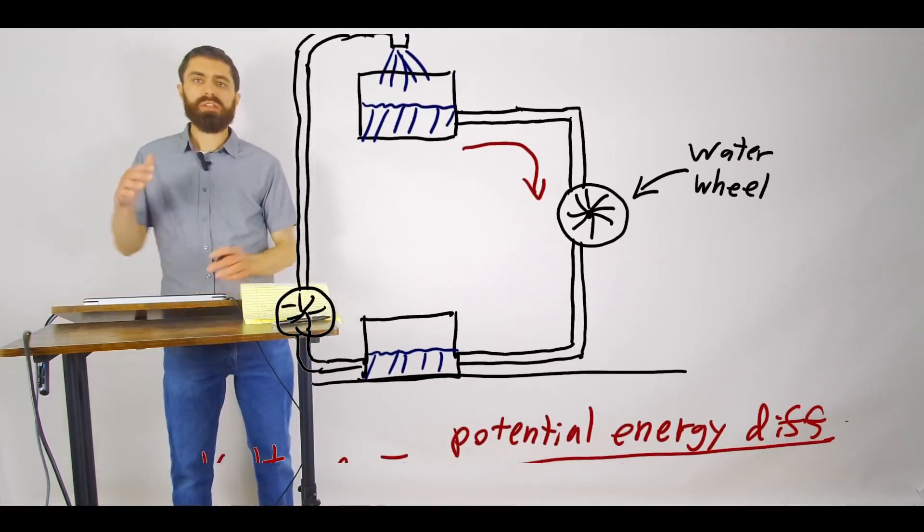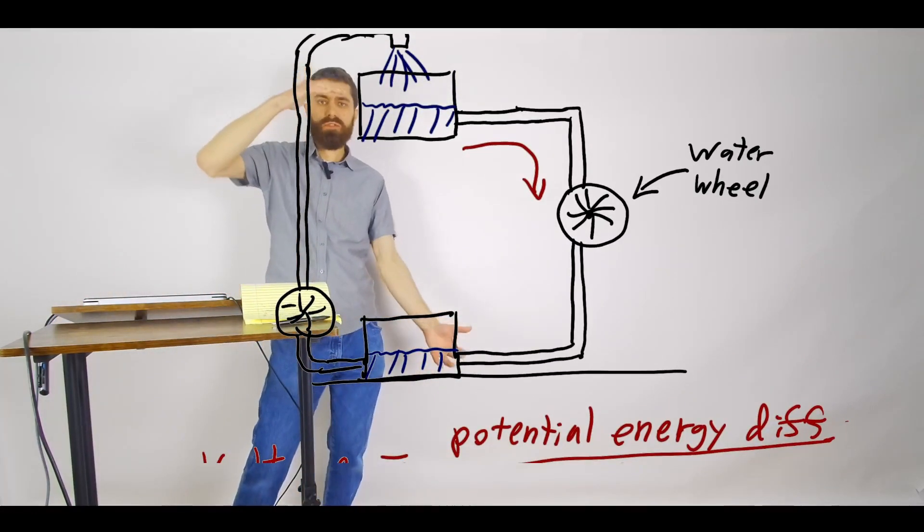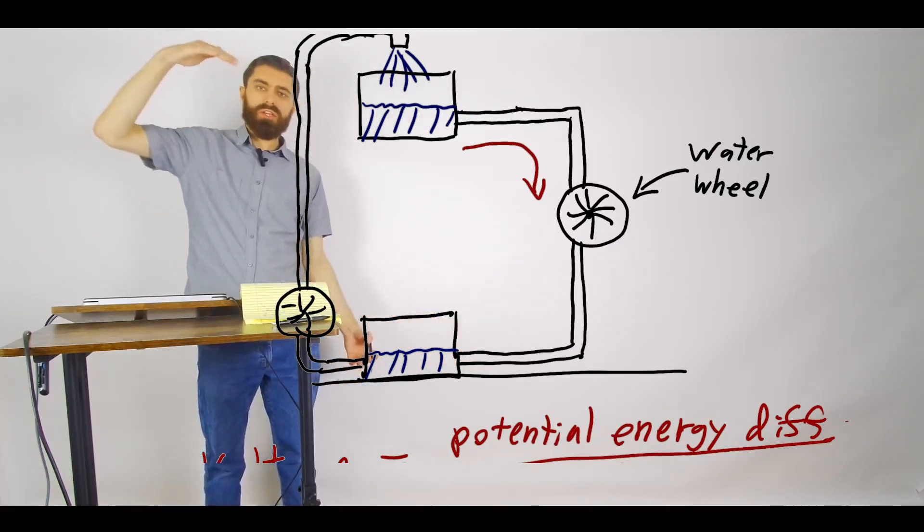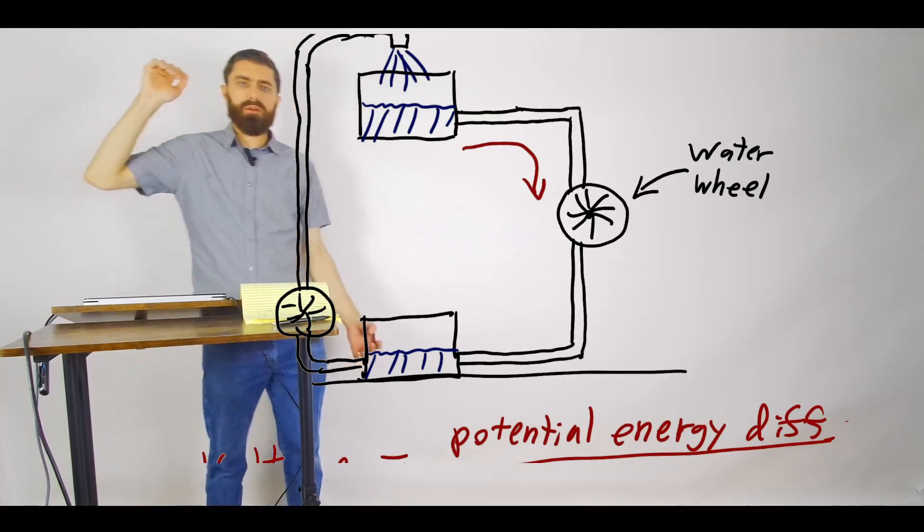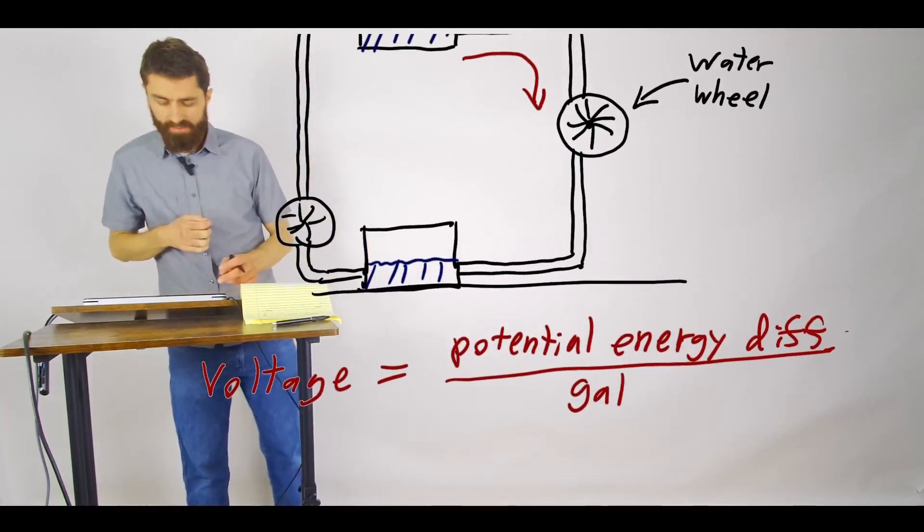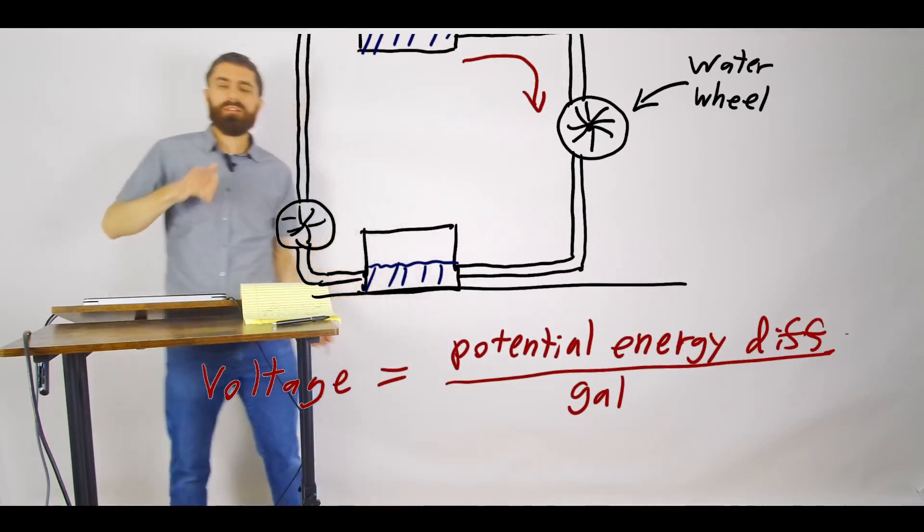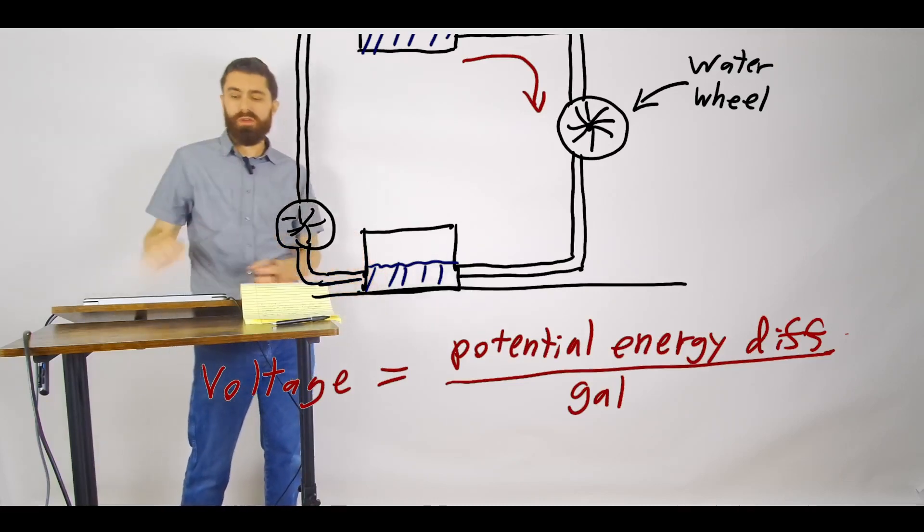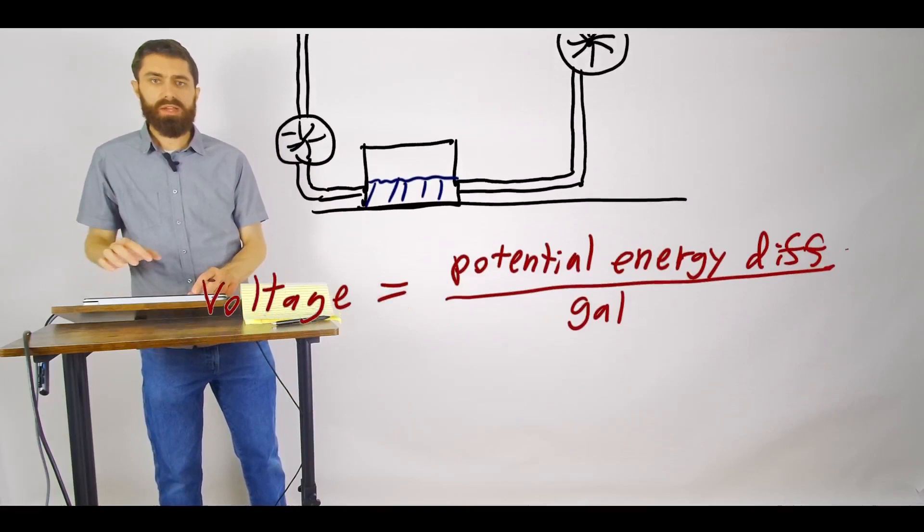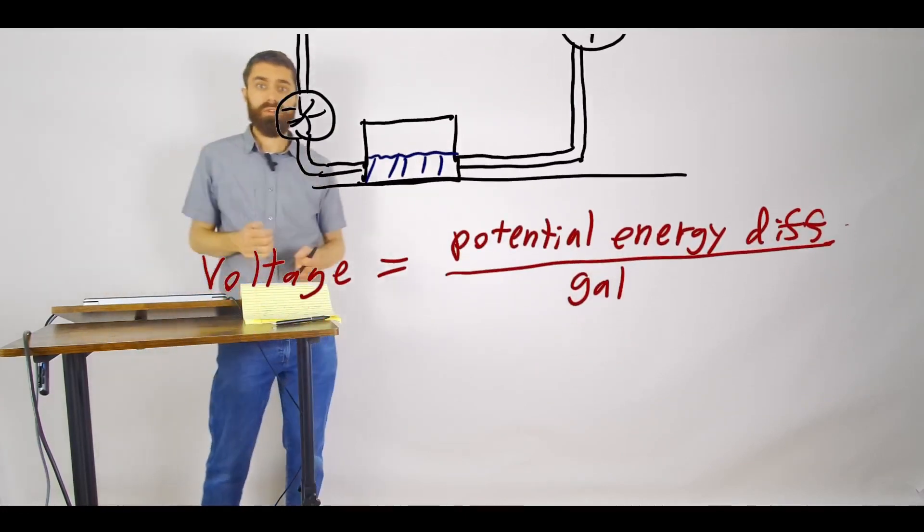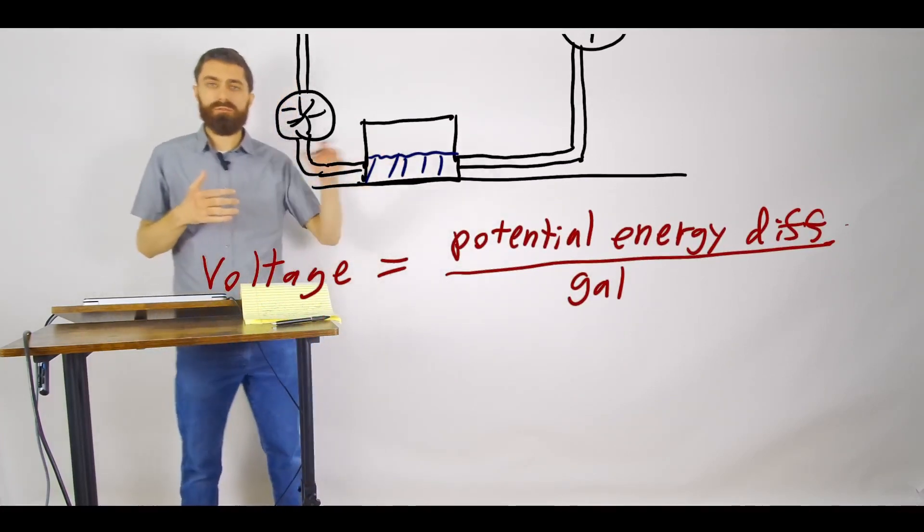So essentially the greater the height between these two tanks, the more gravitational potential energy is stored in that upper tank. And so the potential energy then is released as it falls down. So essentially the greater the height, the greater that potential energy difference, gravitational potential energy, between these two tanks and therefore the greater the voltage. And so that's essentially what's motivating the water to flow through.